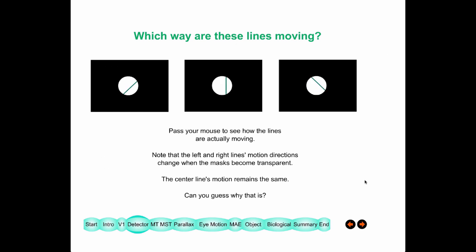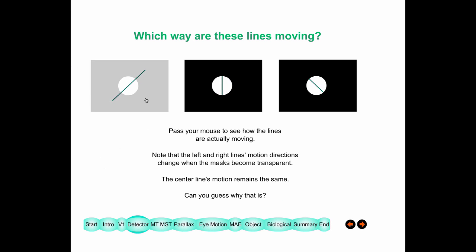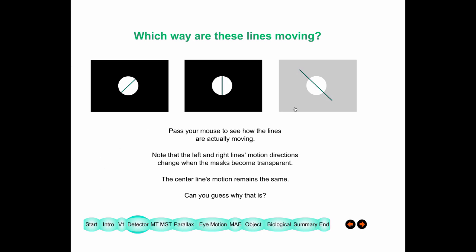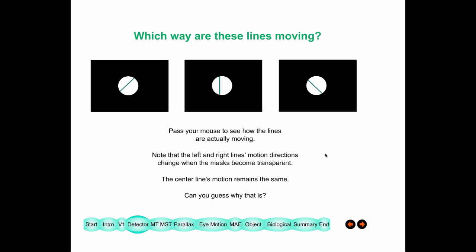Looking at some examples of sensing motion: if you look at a set of lines, you might say one is moving down to the right, one horizontally, one up to the right. But if the black border is removed, you can see that all these lines are actually moving horizontally. It is because we put the lines behind a covering that hides their ends that we get this illusion.